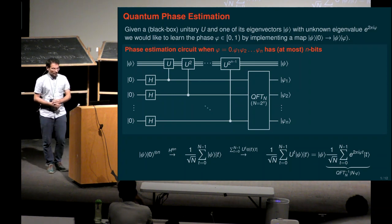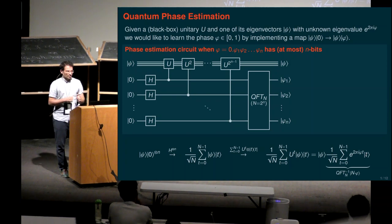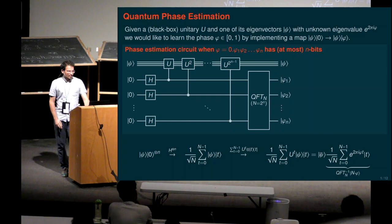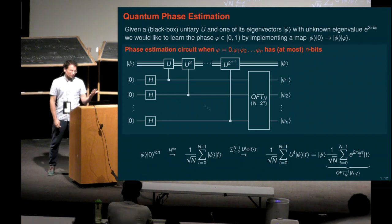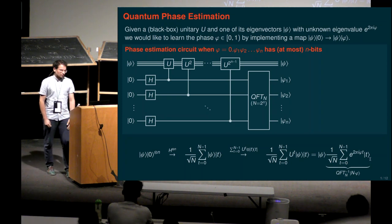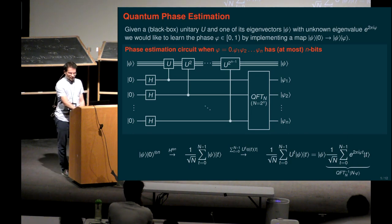This phase factor can be pulled through and put in front of the other register — this is called the phase kickback trick. It relies on the fact that with a tensor product, you can freely transform complex numbers from one component to the other. It's very surprising at first because we were acting on psi, yet the action appears on t. This control structure with phase kickback effectively applies a phase to the t registers. The state we get after rewriting is just the quantum Fourier transform of the integer N times phi.